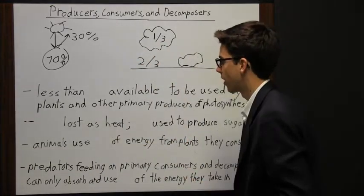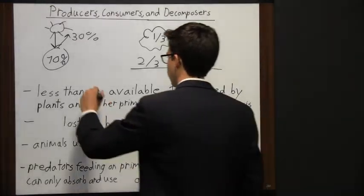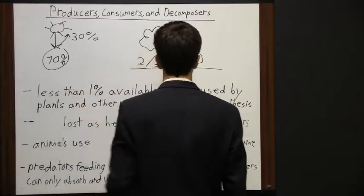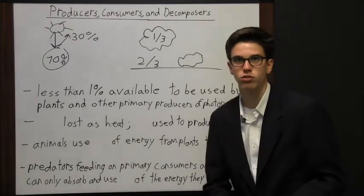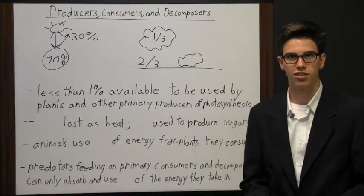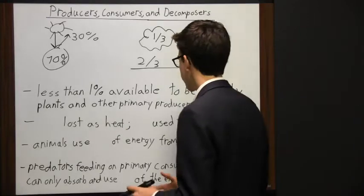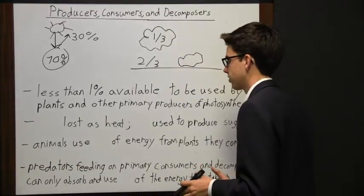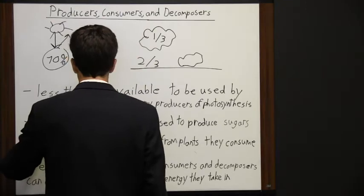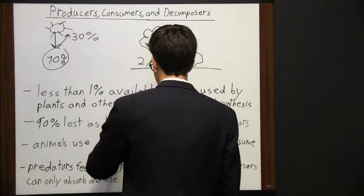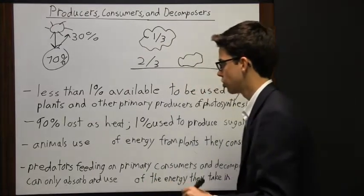That's supposed to be a bush, by the way. Of all the energy making it to Earth, less than one percent is available to be used by plants and other primary producers for photosynthesis. Of that solar energy available to them, 90% is lost as heat, and so there's only about one percent that can be used to produce sugars.